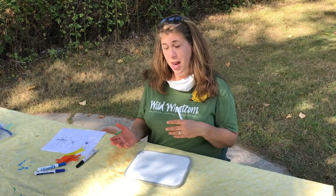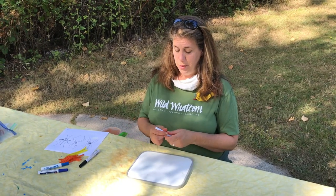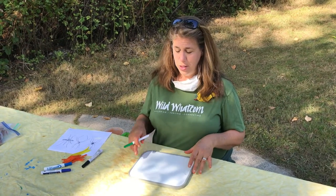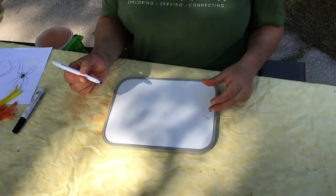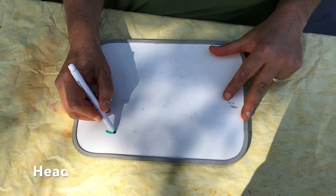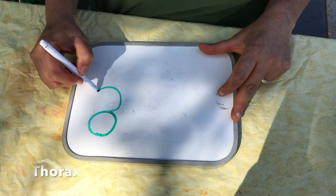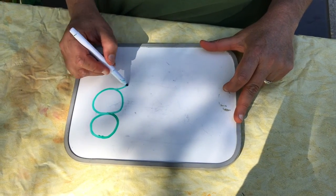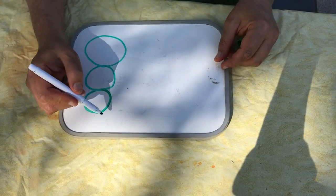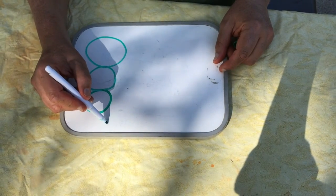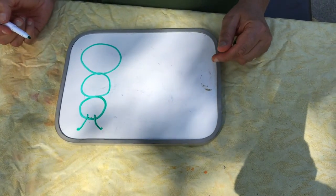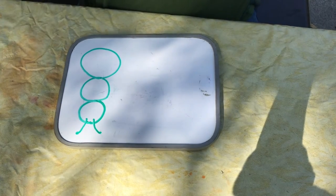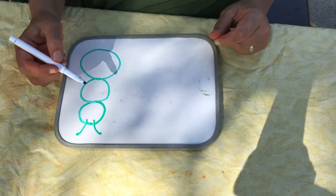We're going to talk about spider anatomy and what's different between a spider and an insect, all close up and personal. So if you have your paper out and a pen, I'm going to draw — you can draw with me — an insect. Here's the head. Here's the thorax. Here's their abdomen. Antennae, of course, go on the head. And the legs go where an insect has a lot of muscle, so that's in the thorax.